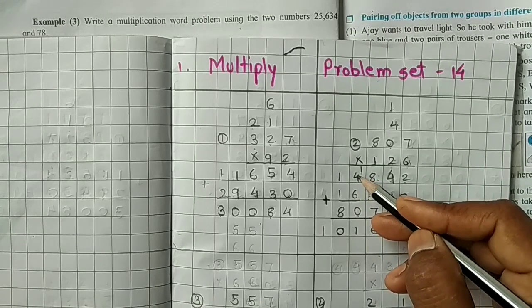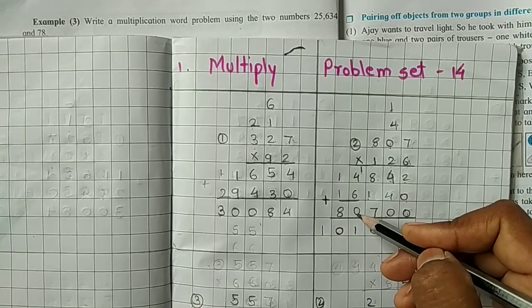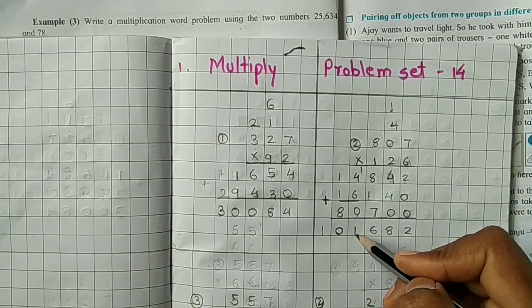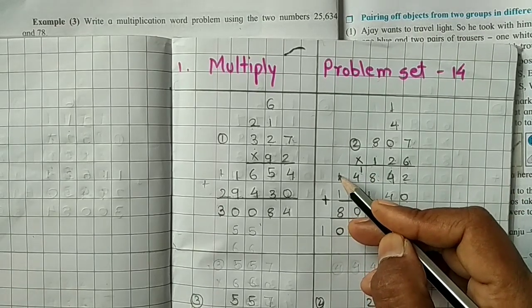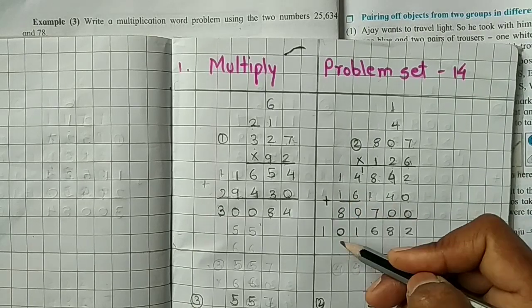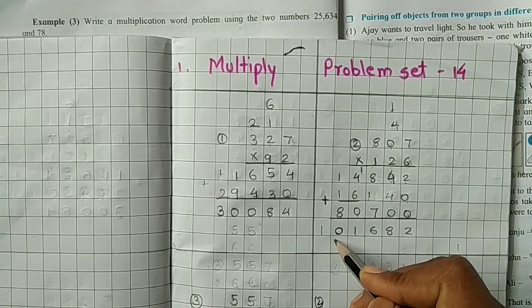Next, 6 plus 4, 10 plus 0, 0 plus 1, 11. So 1 write here, 1 carry forward for next place. So 1 plus 1, 2 plus 8, we get 10.